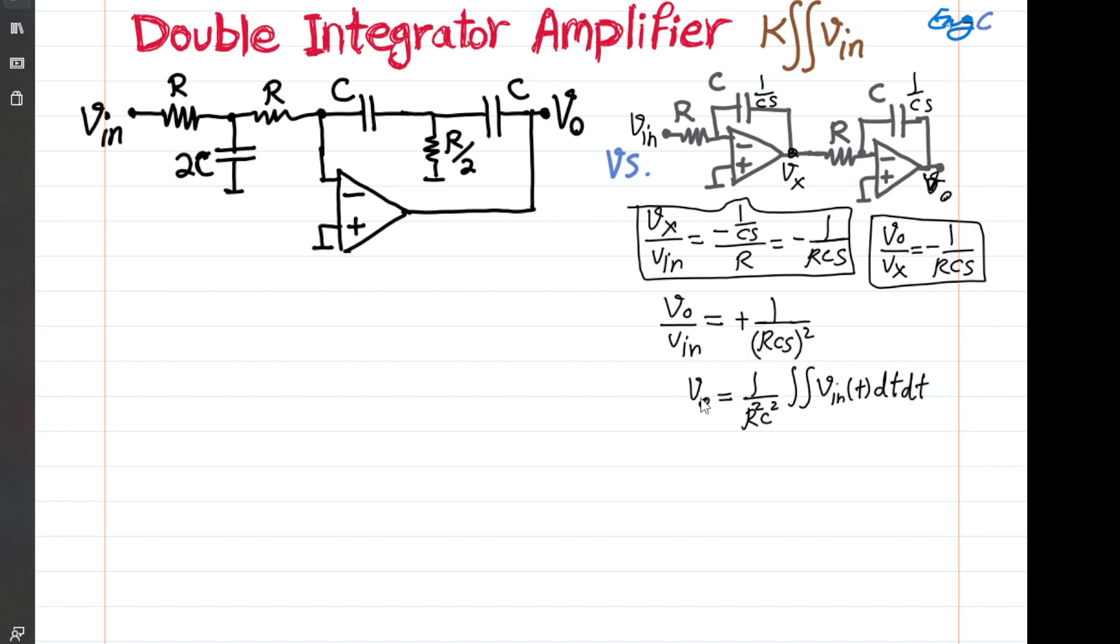So that's the double integrator, implemented with the cascade of two simple inverting amplifiers with capacitors and ideal op-amps. But it requires two op-amps. In the circuit that is shown on the left-hand side, you can see an implementation of double integrator using just one op-amp. How is it working? Let's start.